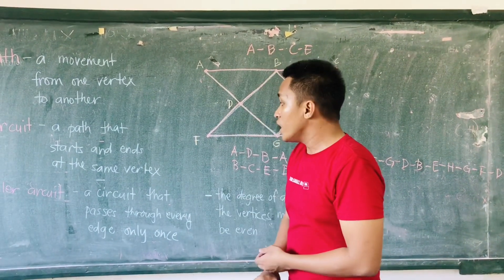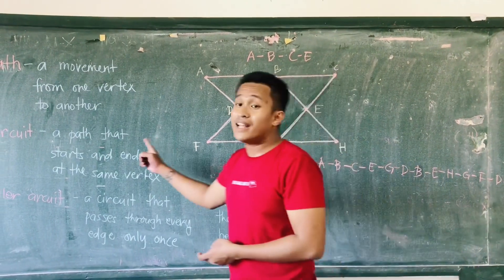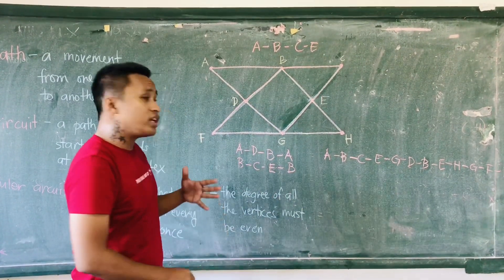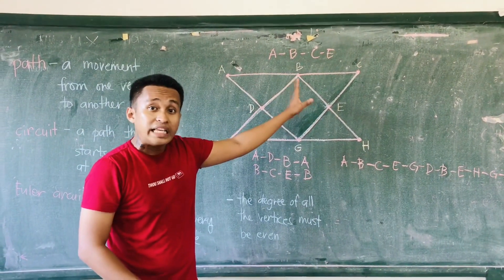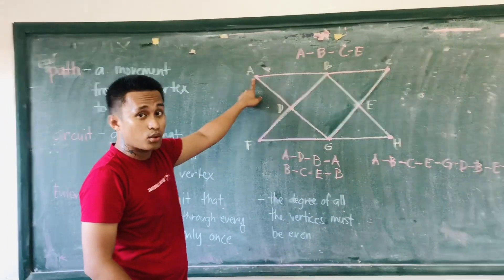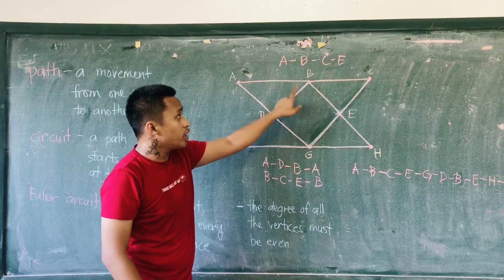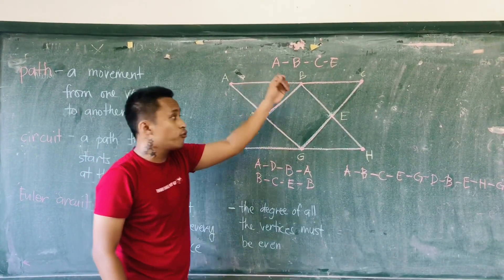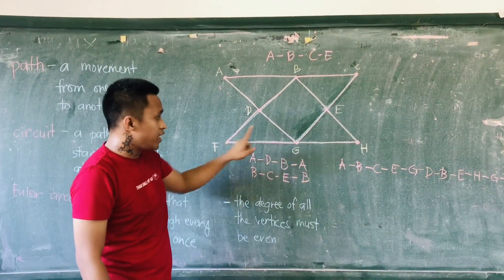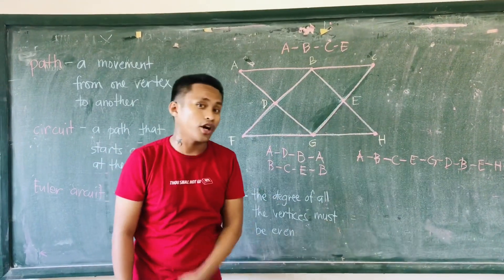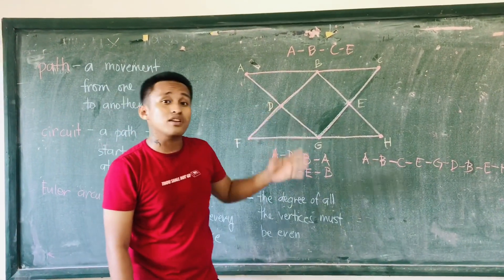An Euler circuit is a circuit that passes through every edge only once, starting and ending with the same vertex. You can only determine if a graph has an Euler circuit if and only if all of the degrees of the vertices are even. The degree of a vertex is the number of edges connected to it. For example: degree of A is 2, B is 4, C is 2, D and A are 4, F and H are 2, and G is 4. Since all degrees are even, we can draw different kinds of Euler circuits from this graph.